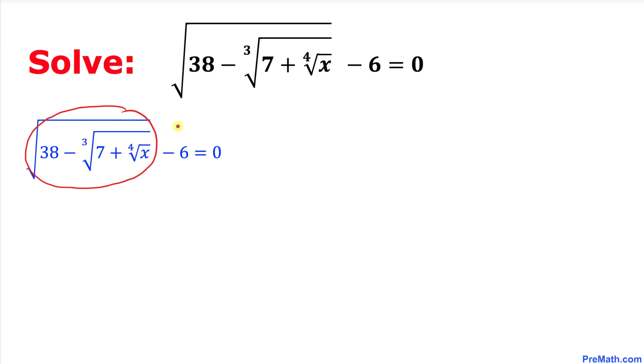So that means this negative 6 should go on the right hand side. Here as you can see I have just copied down square root of 38 minus the cube root of 7 and then within that cube root we got a fourth root of x equal to 6.